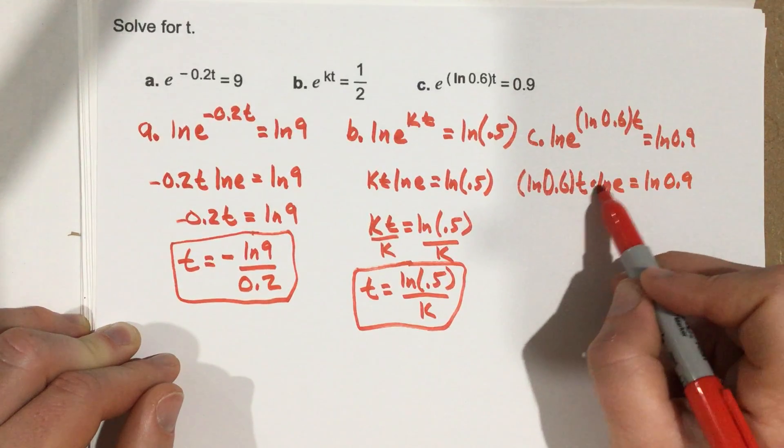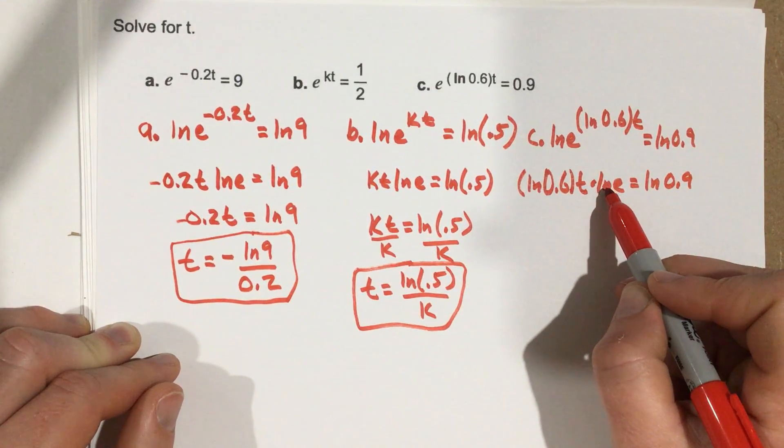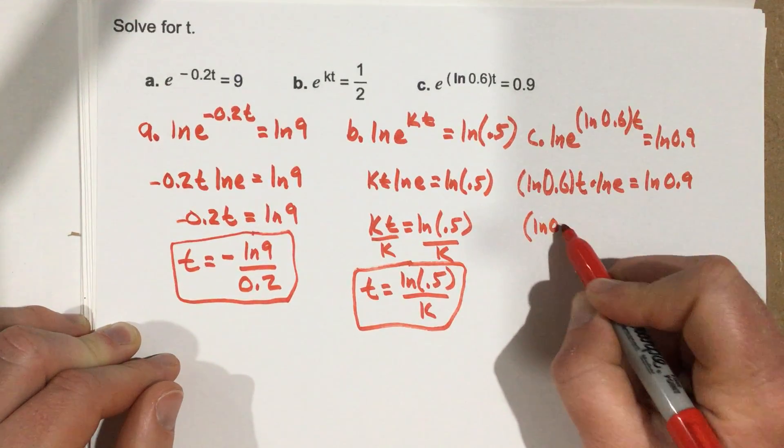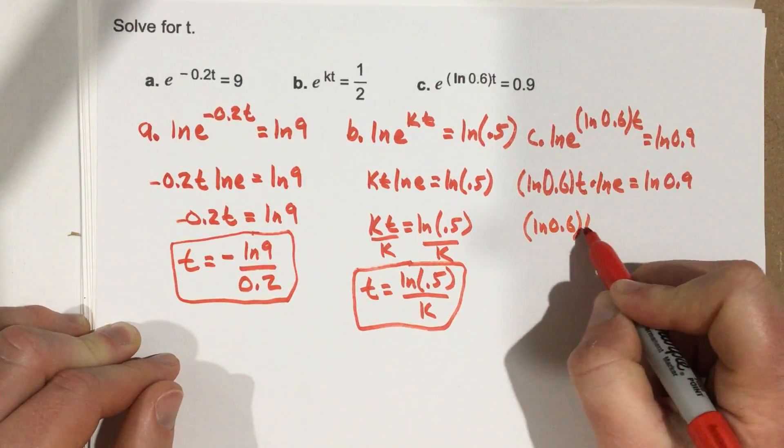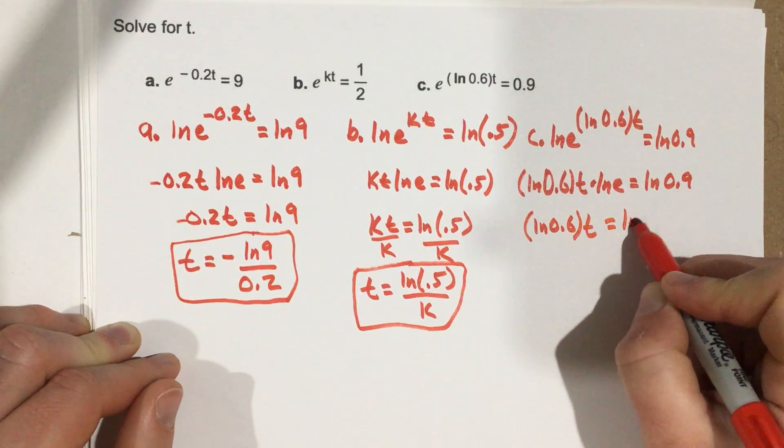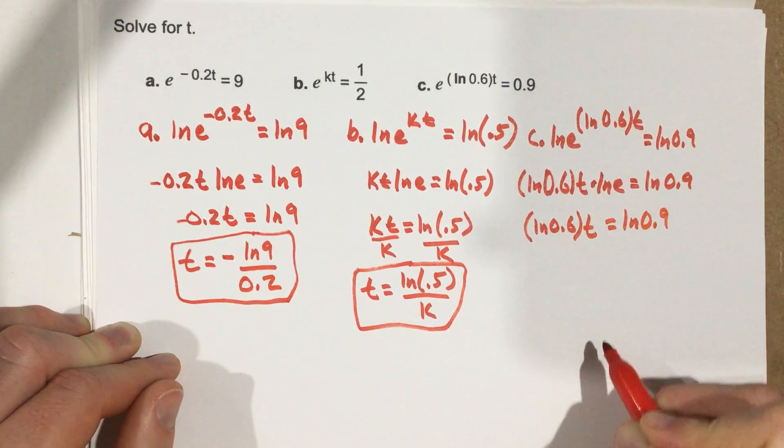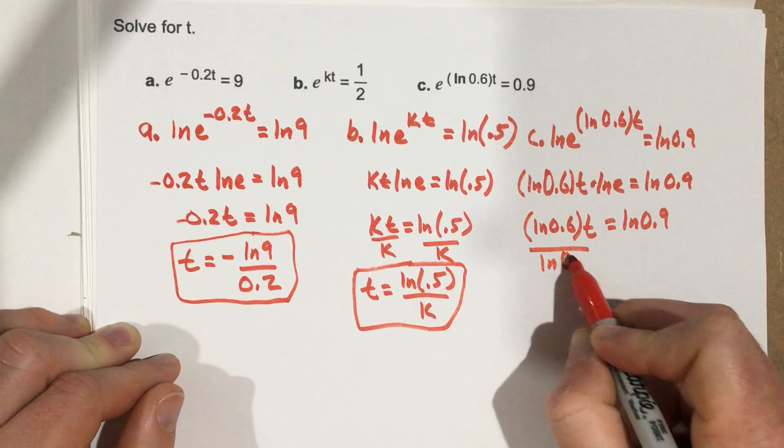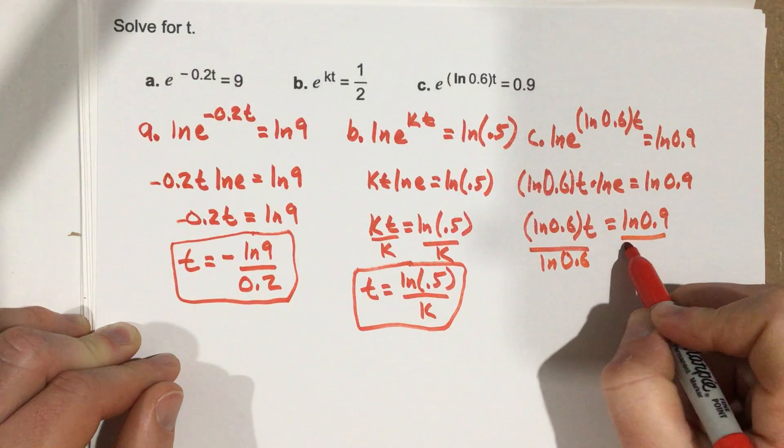This natural log e is going to cancel, so I'm left with just natural log of 0.6 t equals natural log 0.9. Now I can divide this across and divide by natural log of 0.6 on each side.